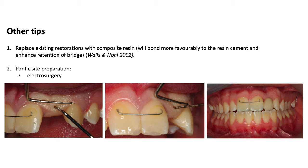Something else to consider is preparation of the pontic site with electrosurgery or a dry high-speed bur when there is excessive gingiva in the area. You can draw an imaginary line between the gingival margin of the central incisor and the canine — the gingival margin of the pontic should sit one millimeter below this line. If excess tissue isn't removed, the pontic will look very small. The alternative ridge lap design would be really difficult for the patient to clean.